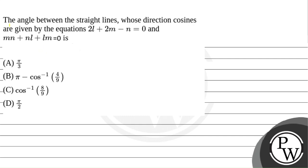Hello! In this question, it is given that the angle between the straight lines whose direction cosines are given by the equations 2L plus 2M minus N equals 0 and MN plus NL plus LM equals 0. We have to find the answer from the given options.